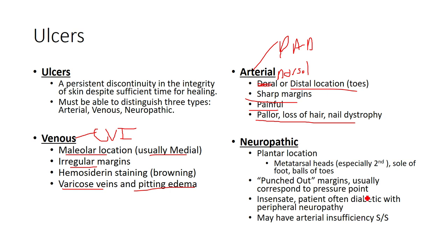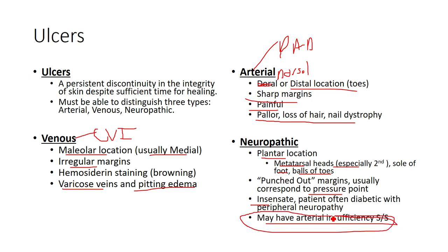Neuropathic lesions, which we see in individuals with diabetes, tend to have a more plantar location — the metatarsal head, especially the second, the sole of the foot, and the balls of the toes. Basically where the center of pressure progresses during walking. They have a punched-out presentation relating to a pressure point. They tend to be insensate, usually because patients have diabetic peripheral neuropathy and can't really feel their feet — that's why they end up developing these ulcers. They may also have some signs of arterial insufficiency, and sometimes it's hard to distinguish arterial from neuropathic wounds.